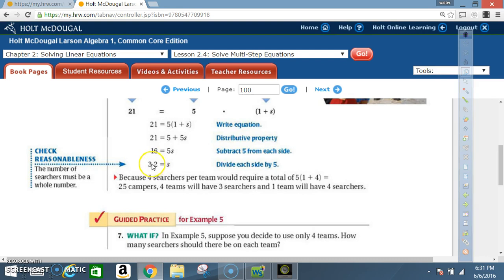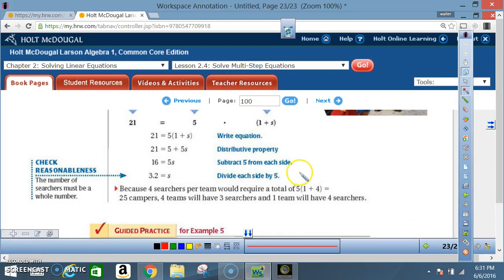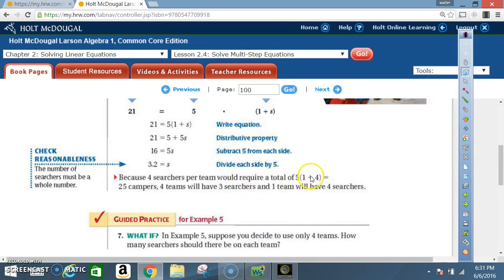Once again, you cannot have a half or a piece or a fraction of a searcher. A person must be a whole number. Because four searchers per team will require a total of 5 times 1 plus 4. What's 1 plus 4? That's going to equal 5. So in essence I'm saying 5 times 5, and what's 5 times 5? That's going to be 25.